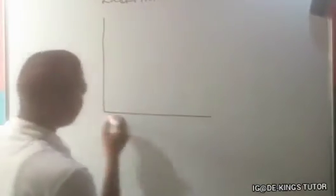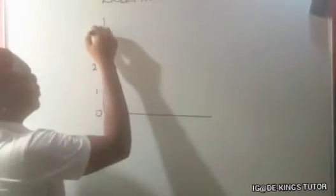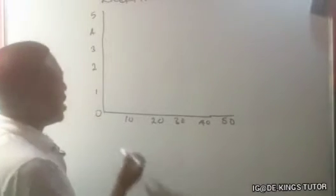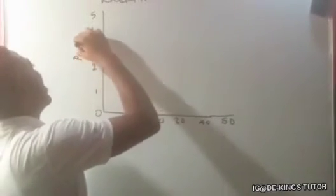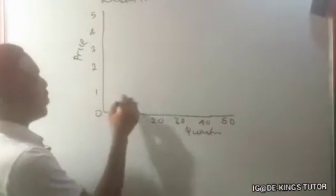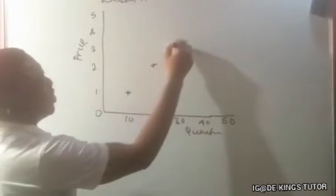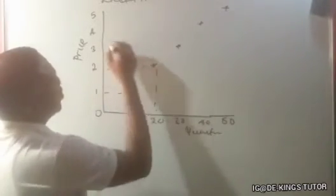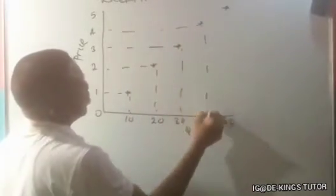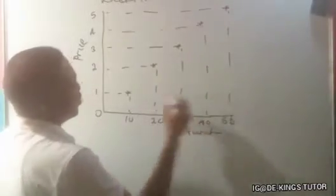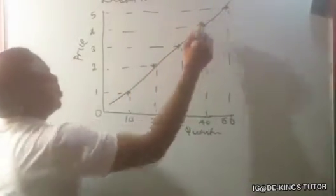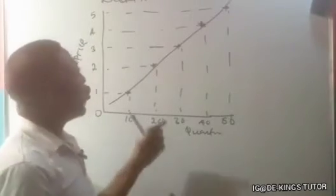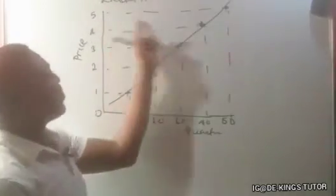The exceptional demand curve looks like this: with price on the vertical axis and quantity on the horizontal axis, at one price less is demanded, at two less, at three less, at four less, at five less — so the curve slopes upward from left to right, unlike the normal demand curve. It indicates that at low price less is demanded, and at high price more is demanded.